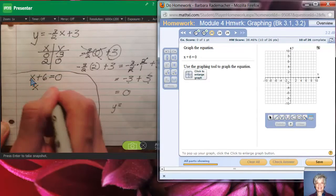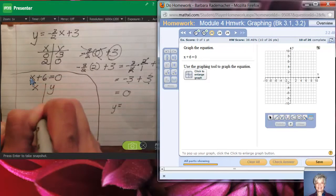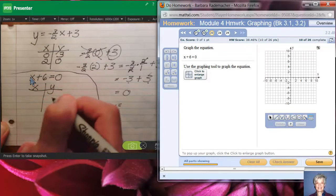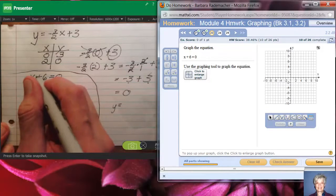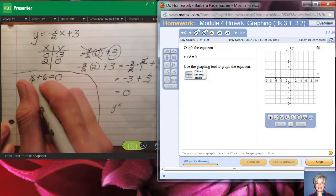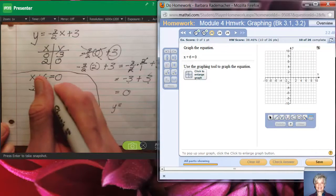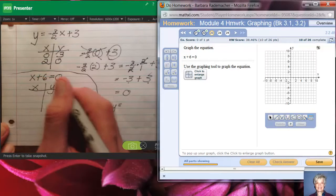Now we can pick an X and Y table. Choose any numbers you want for X. Actually, you can't do that, can you? Choose any numbers such that you can add it to 6 and you'll get 0.